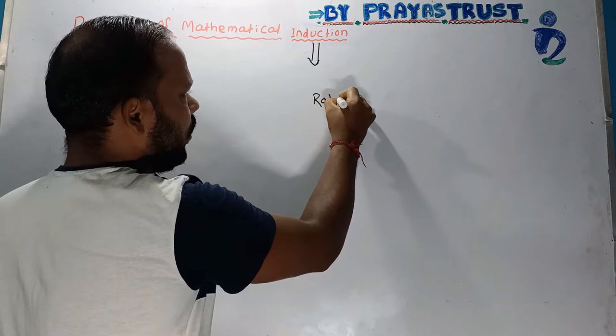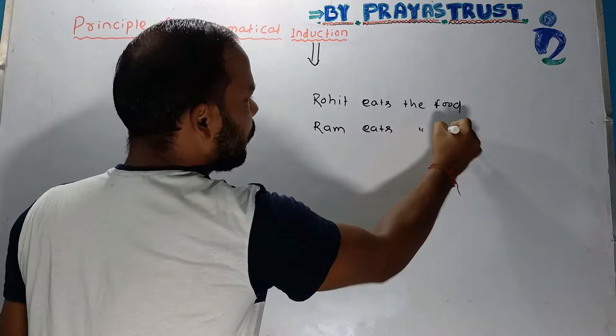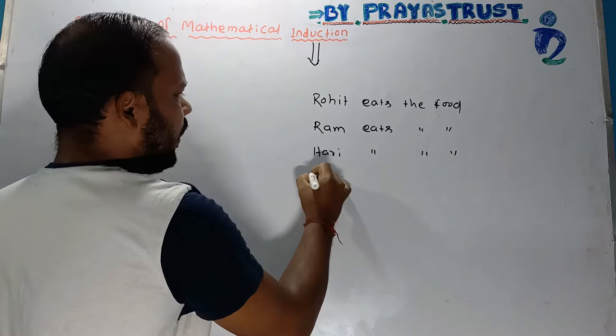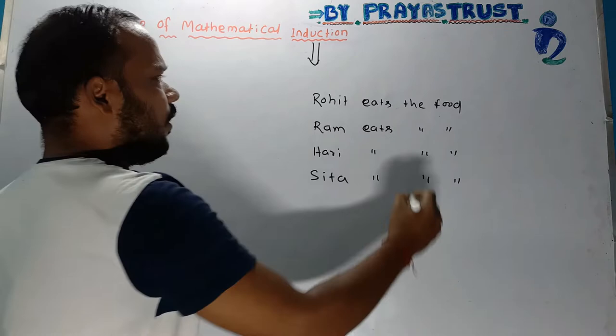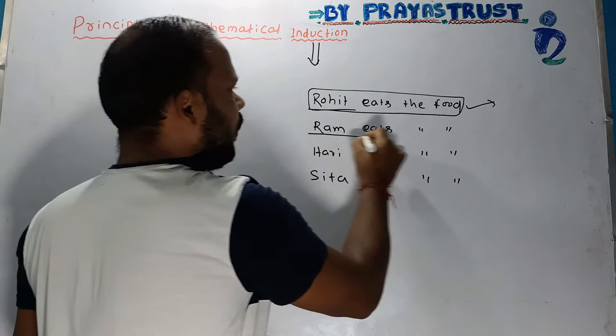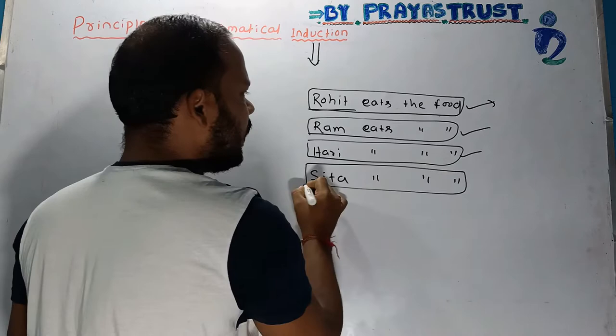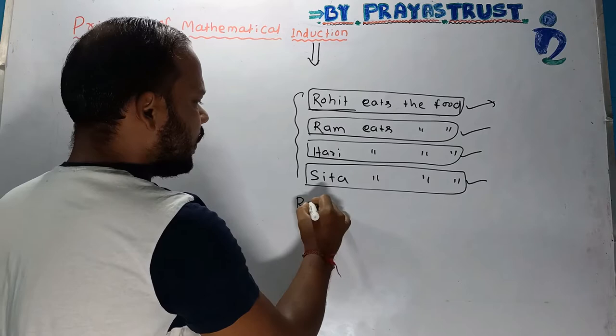Here is an example: Rohit eats food, Rama also eats food, Hari also eats food, and Sita also eats food. So these are four statements — each one is a specific case about a particular individual.